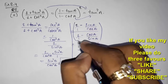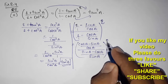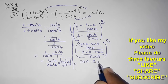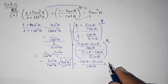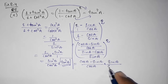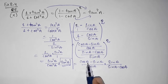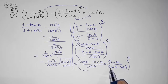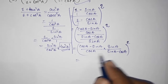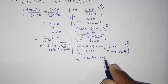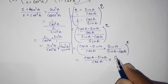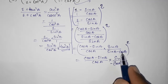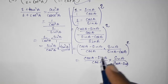Now simplifying the compound fraction: (cos a - sin a)/cos a multiplied by sin a/(sin a - cos a). Notice cos a - sin a and sin a - cos a — we can take out minus common from the denominator. This makes sin a - cos a become minus(cos a - sin a), so cos a - sin a cancels out.